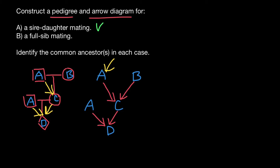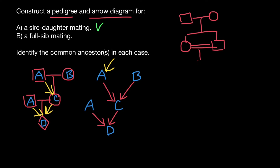Second question: a full sibling mating. So let's show it. We have a couple here — a couple of animals — which has two siblings, who of course have to be of different sex. And here is a consanguineous mating, which we show with a double line, which produces progeny. So we have individual A, B, C, D, and E — five individuals in total. Here we have full siblings mating which results in progeny E.